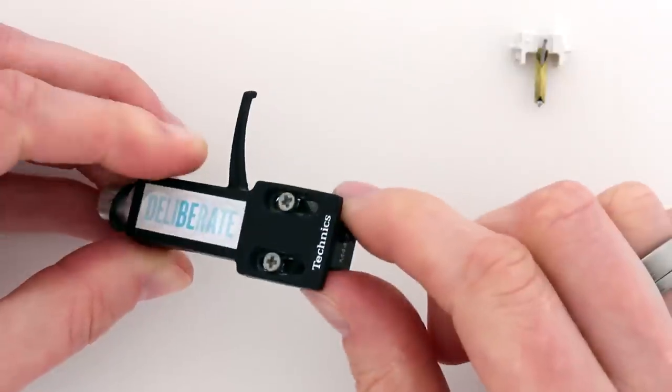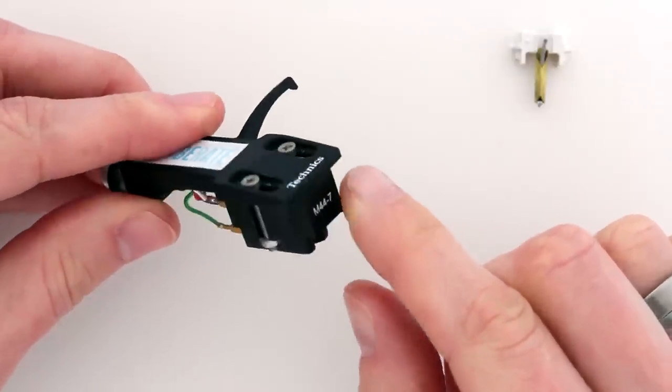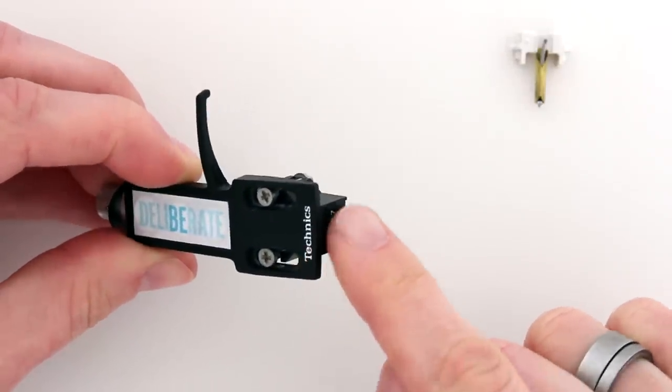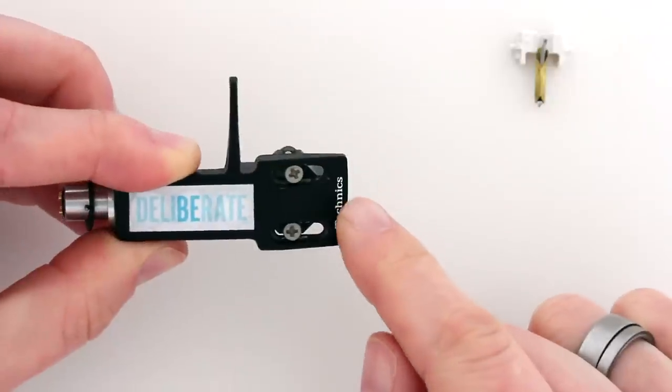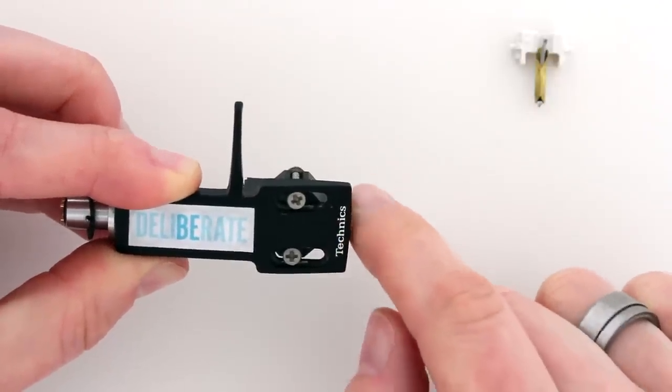And then if you're using these particular models, I recommend mounting them flush up to the head shell, so when you're looking down, there's no overhang.